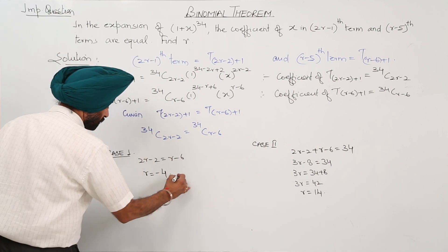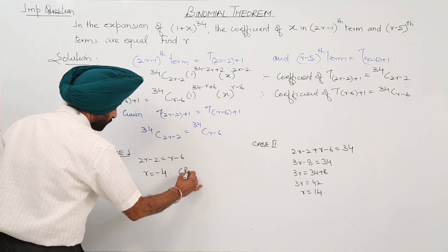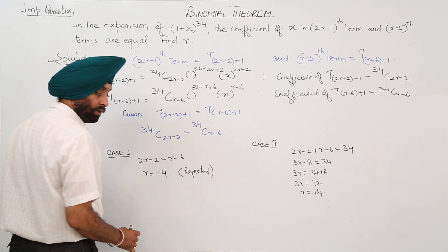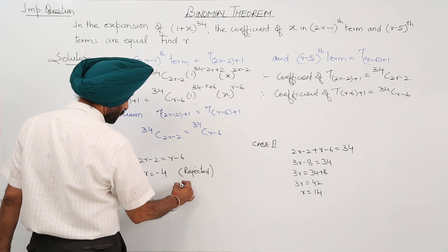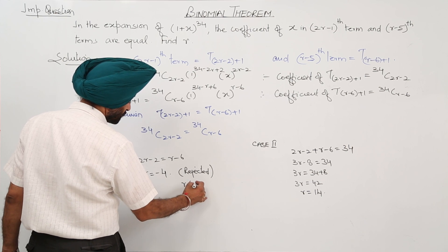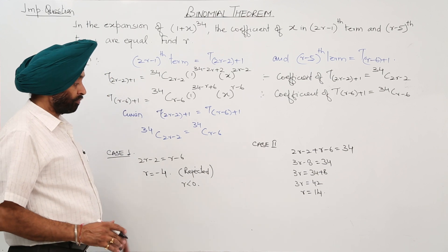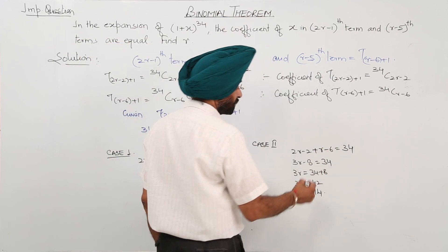This term will be rejected. Why? Because r is less than 0, so this term is rejected.